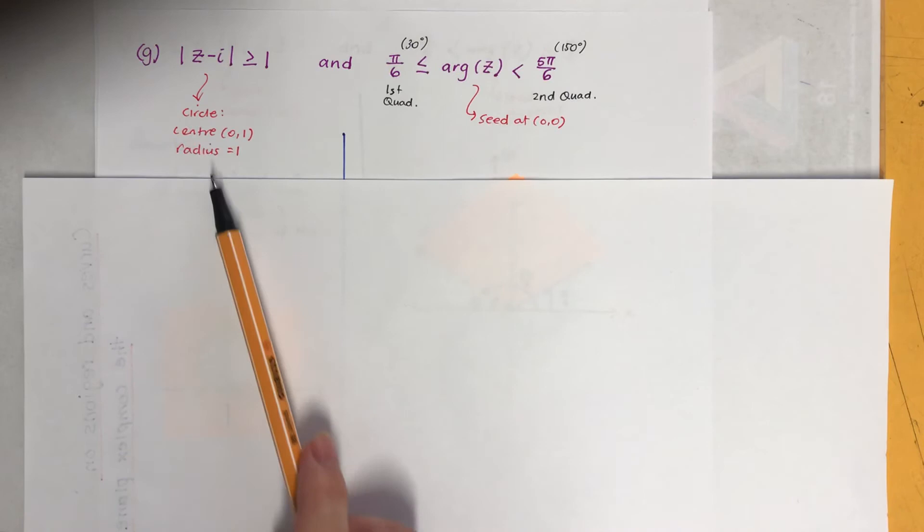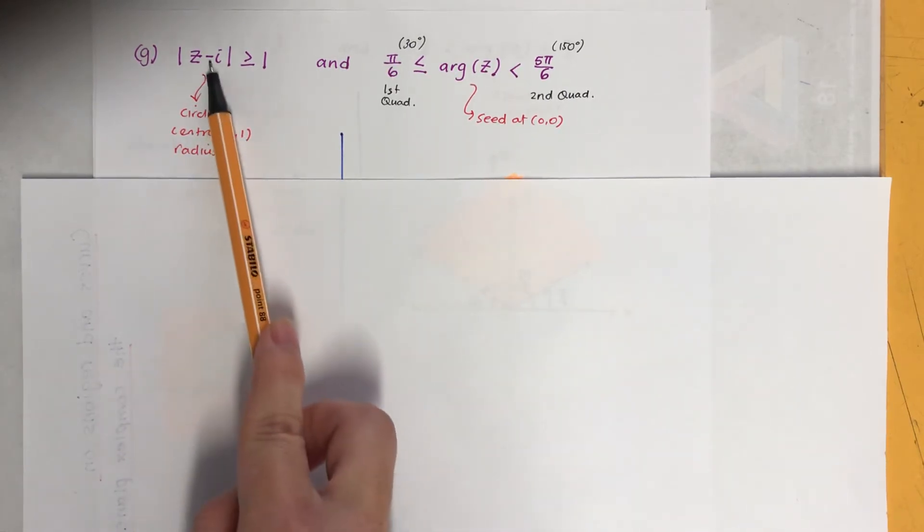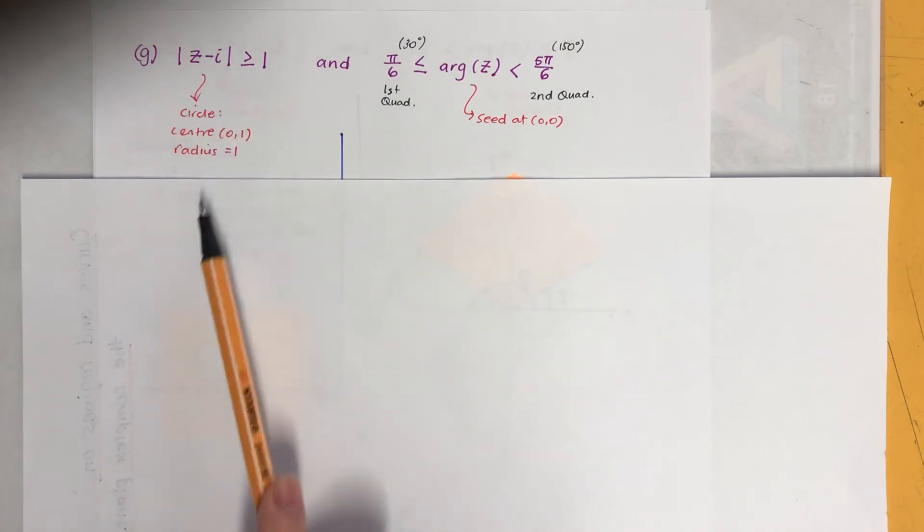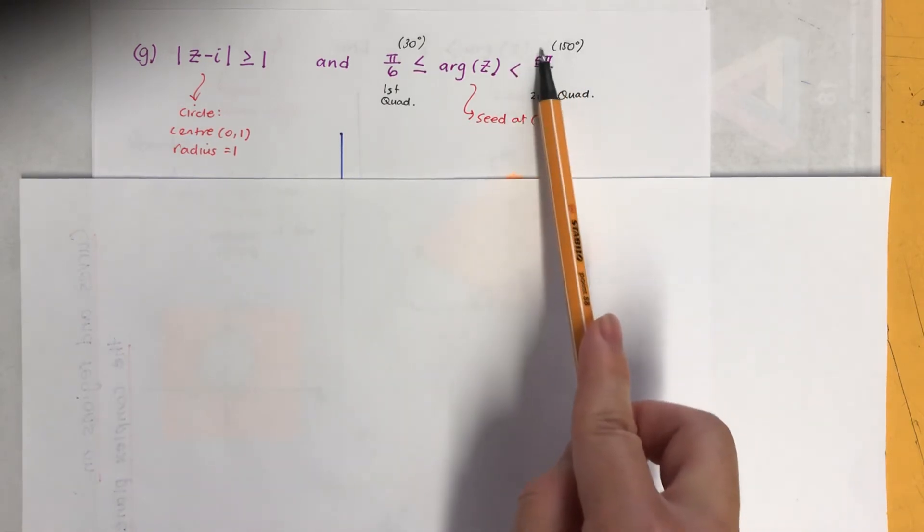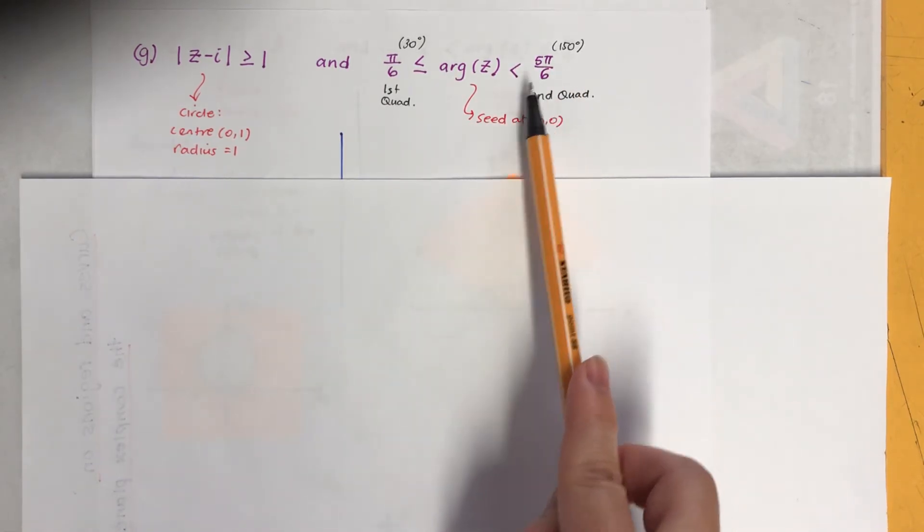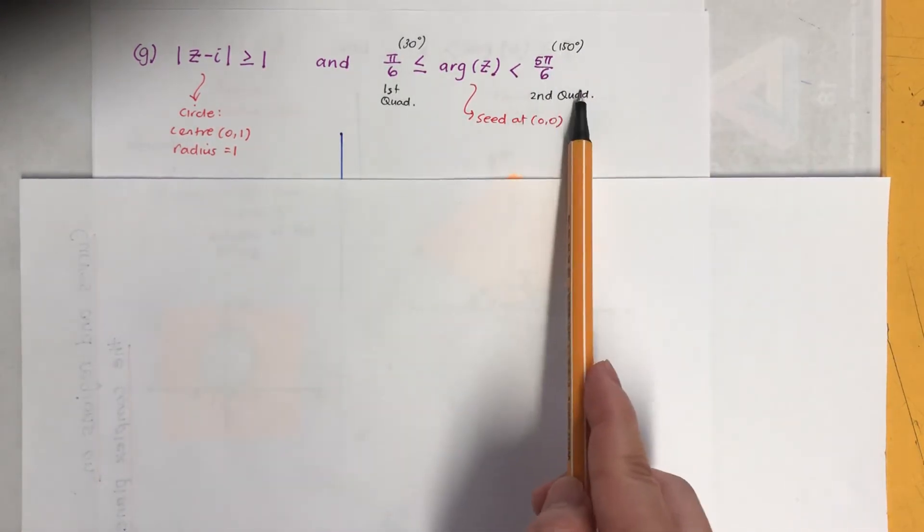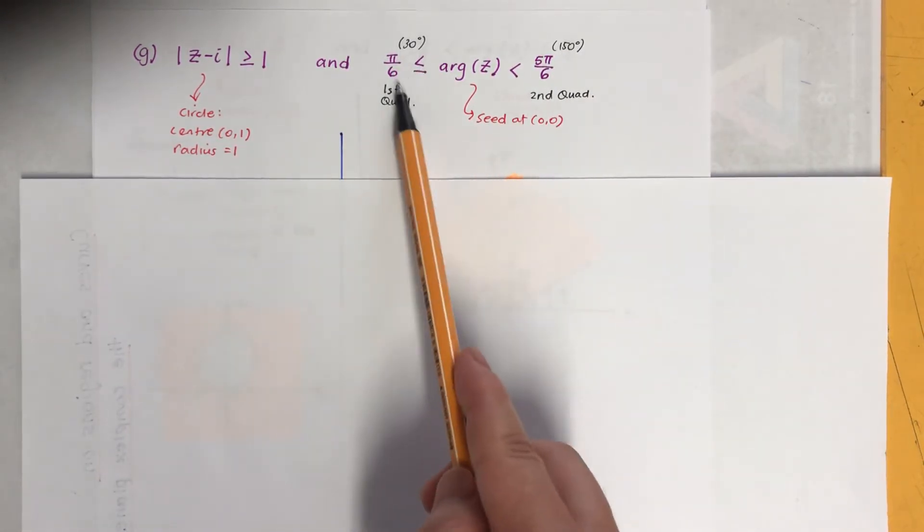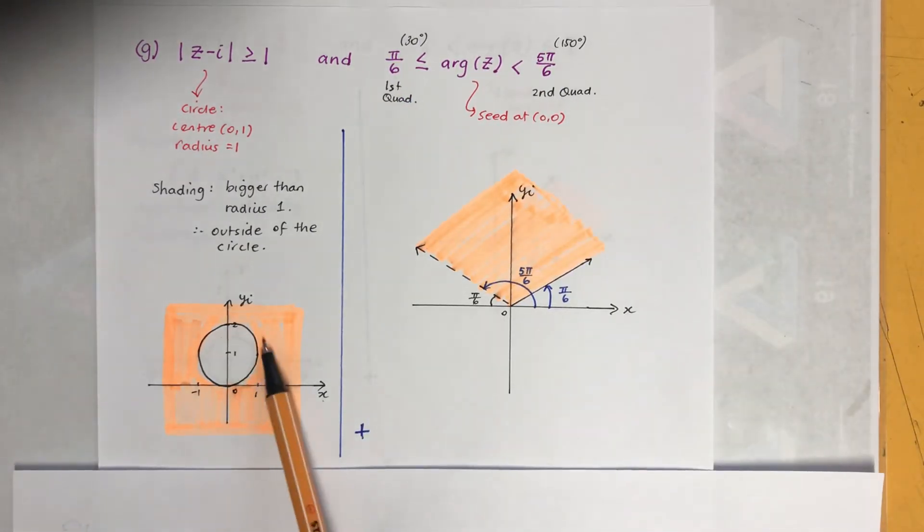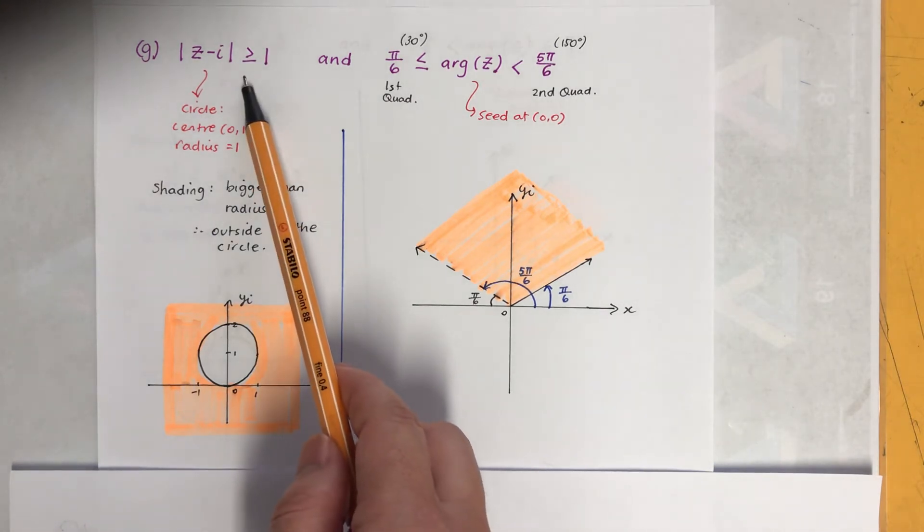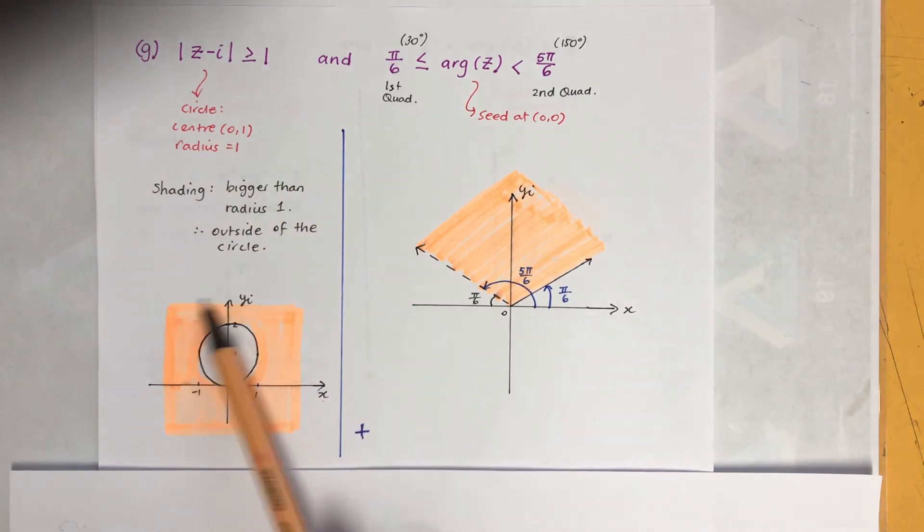So the next one, again this is a circle. This time the center is zero and one because it's imaginary and radius is one. And seed starts at zero zero. Now remember, five pi over six is second quadrant because it's 150, I mean it's more than half, that's why it's second quadrant. And that's first quadrant, so I separated.